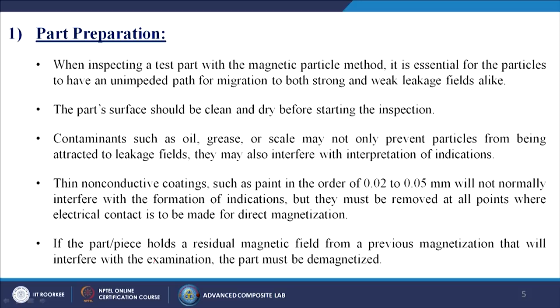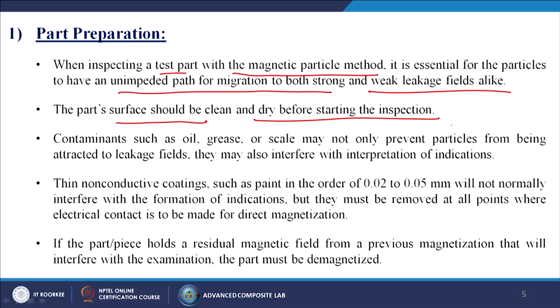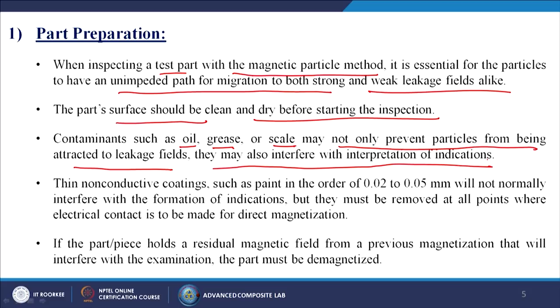Regarding part preparation: when inspecting a test part with the magnetic particle method, it is essential for the particles to have an unimpeded path for migration to both strong and weak leakage fields. The part surface should be clean and dry before starting the inspection. Contaminants such as oil, grease or scale may not only prevent particles from being attracted to leakage fields, they may also interfere with interpretation of indications. If there are cracks or pores on the surface and oil or grease is present, that cavity will be filled by those materials, so we must first clean the surface so that the cracks and pores are free from any contaminants — then only can we achieve 100% results.